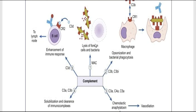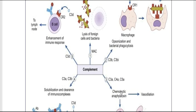For cell lysis: the membrane attack complex formed by C5b6789 — simply called the MAC — ruptures the microbial cell surface, which kills the cell.